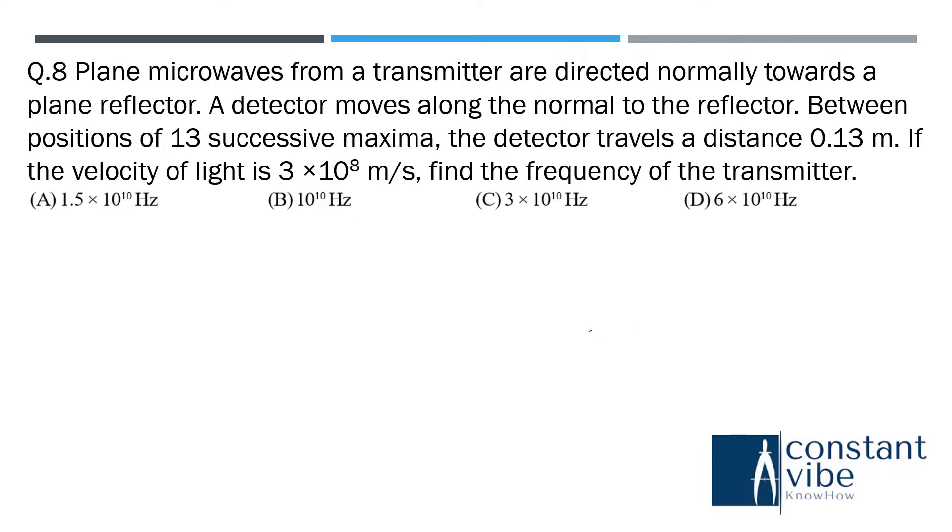Next question, eighth question. Plane microwaves from a transmitter are directed normally towards a plane reflector. A detector moves along the normal to the reflector. Between positions of 13 successive maxima, the detector travels a distance of 0.13 meter. The velocity of light is 3 into 10 to the power of 8 meter per second. Find the frequency of the transmitter. So here the answer is A.